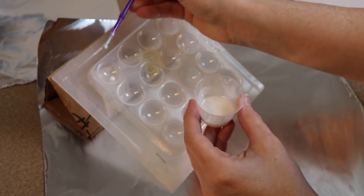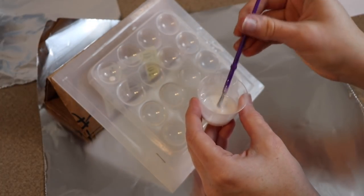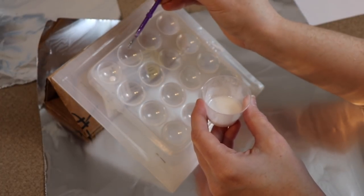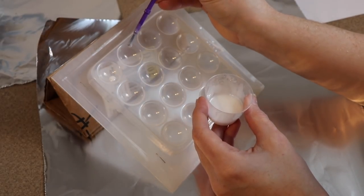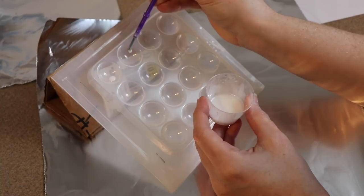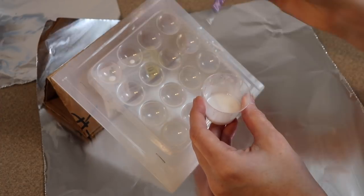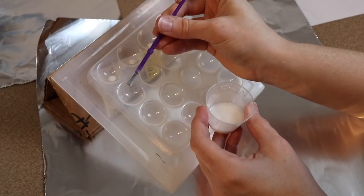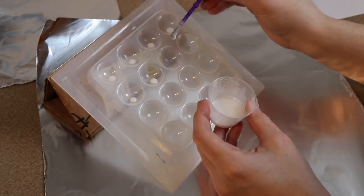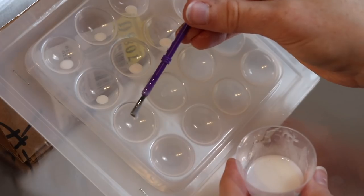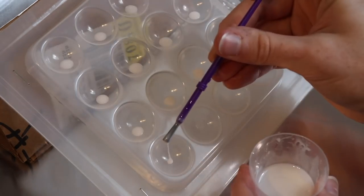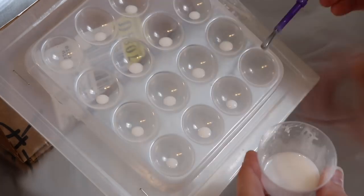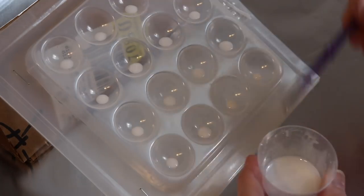I have my resin mixed up. I've added a little bit of white paint to add some color to it and I'm just going to be dripping this into the mold. Try to take your time with this so that you don't get any extra drips anywhere else and your resin only goes where you want it.